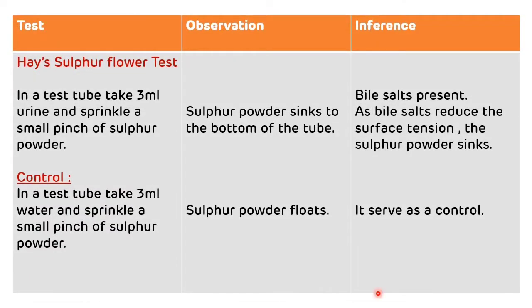Now we will see the procedure, observation, and inference of the Haze Sulphur Flower test. Take two test tubes. In the first test tube, take 3 ml of urine and sprinkle a small pinch of sulfur powder. If the sulfur powder sinks to the bottom of the tube, that means bile salts are present, because bile salts reduce the surface tension, causing the sulfur powder to sink.